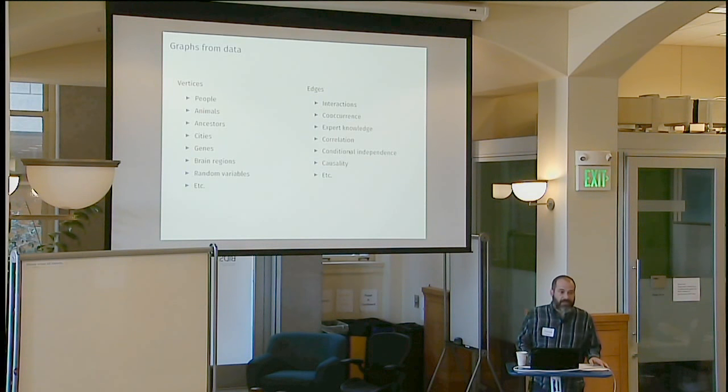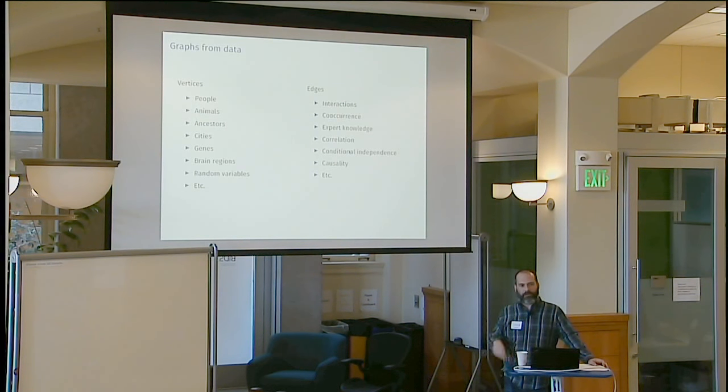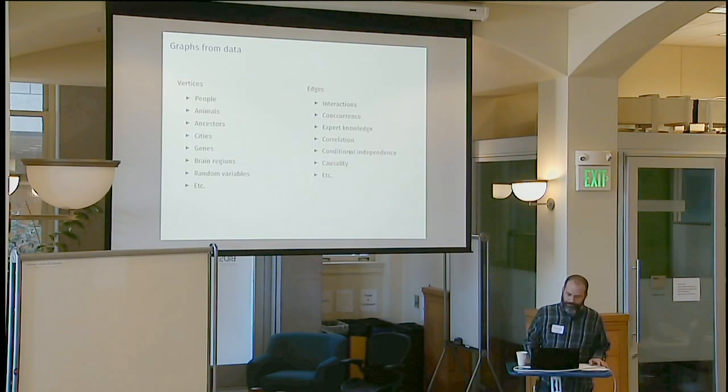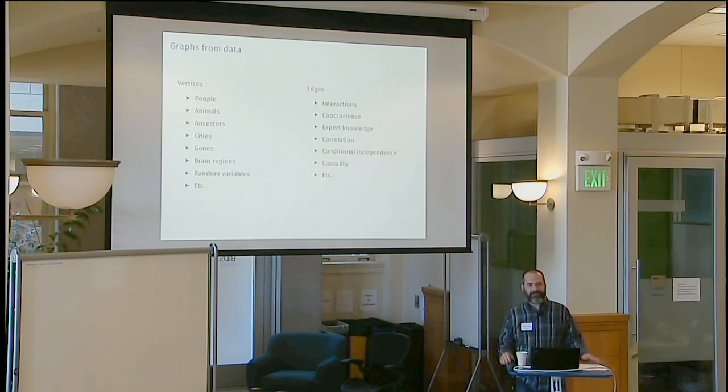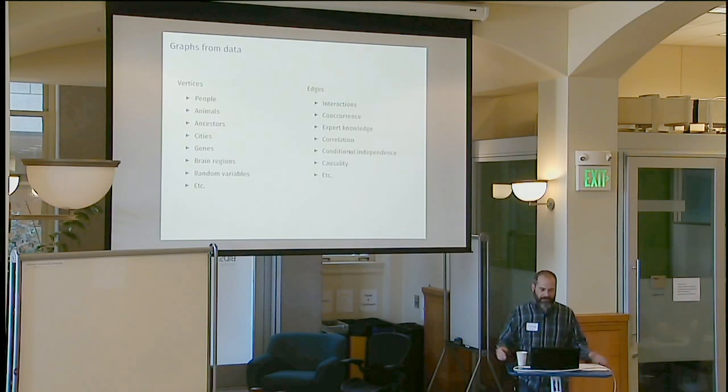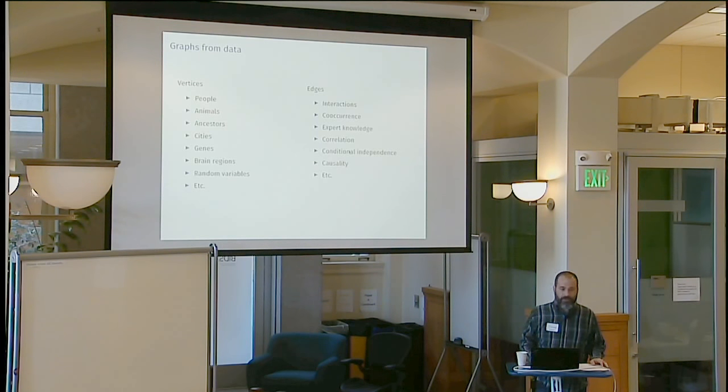But these edges could be things like interactions. So if you're looking at people, you could look at a social structure of who interacts with who, who's friends with who, who talks to who. Co-occurrence, you can just look at things that show up at the same time. So I think Stefan had an example where he worked with scientists looking at sharks, and they were just watching sharks that showed up in the water when you threw out blood at the same time. Edges can be given to you by expert knowledge. You might just go and ask someone that knows that an edge goes here. You could talk to a doctor or someone else in some field. You can also sort of estimate these things. You could look at empirical correlation, conditional independence, causality and on and on.